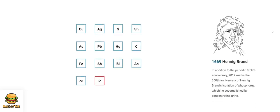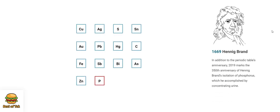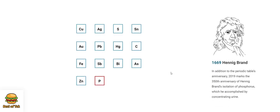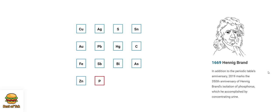1669. Hennig Brand. In addition to the periodic table's anniversary, 2019 marks the 350th anniversary of Hennig Brand's isolation of phosphorus, which he accomplished by concentrating urine.